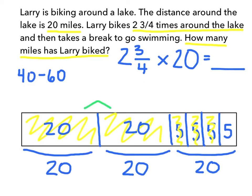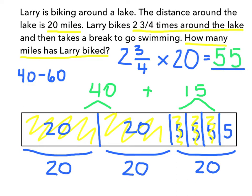The first two times he went around the lake, that was 40 miles — 20 plus 20. And then the next time he went around the lake, that was 5 plus 5 plus 5, or 5 times 3, which is 15. So I need to add up 40 plus 15 to get my total of 55 miles.